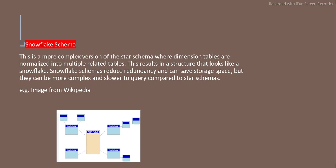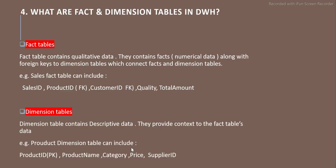The snowflake schema is a more complex version of the star schema — basically an extension of it. The core structure remains the same, but the dimension tables are further broken into additional tables. They are normalized into multiple tables, and that's why it is called the snowflake schema. The dimensions are further normalized and broken into more dimension tables, giving it a snowflake shape. That is the only difference.